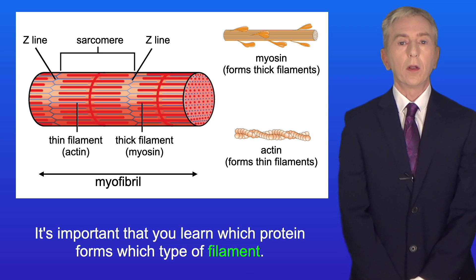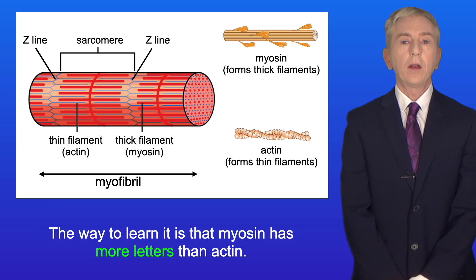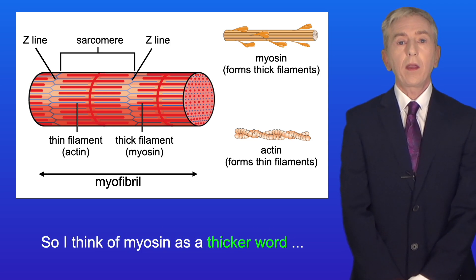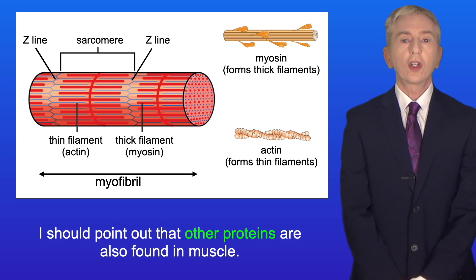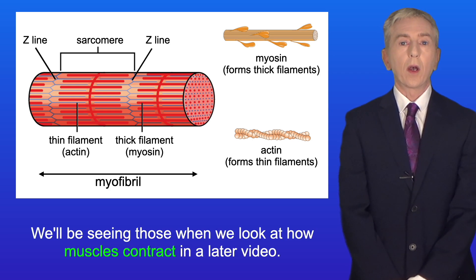Now it's important that you learn which protein forms which type of filament. The way to learn it is that myosin has more letters than actin. So I think of myosin as a thicker word and actin as a thinner word. Now I should point out that other proteins are also found in muscle and we'll be seeing those when we look at how muscles contract in a later video.